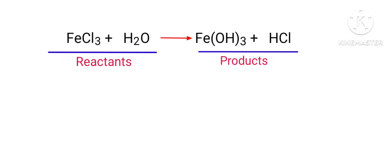In this equation, the reactants are iron chloride and water, and the products are iron hydroxide and hydrogen chloride. If you look at this equation, the equation is not balanced.